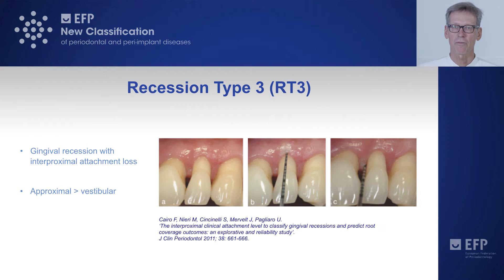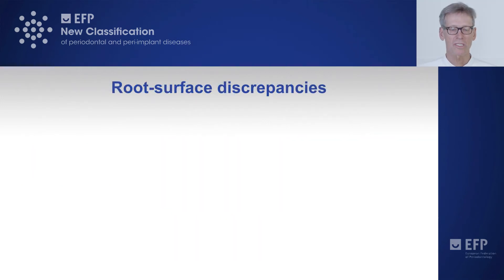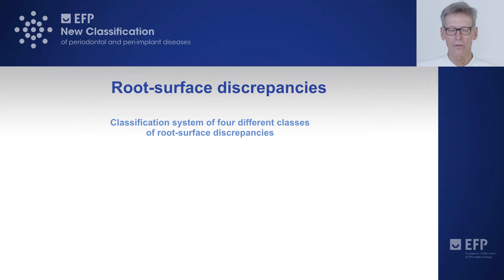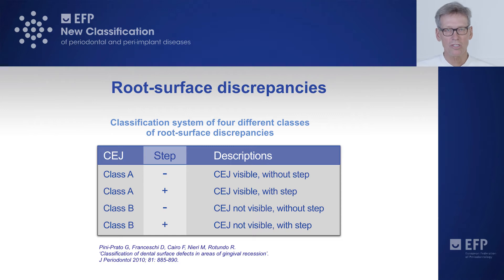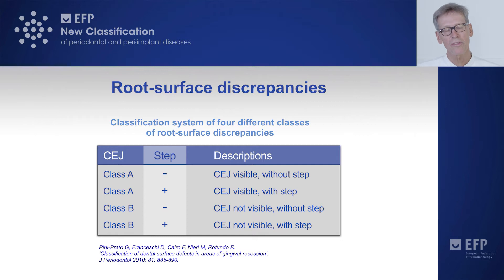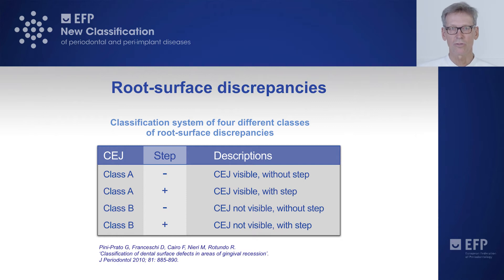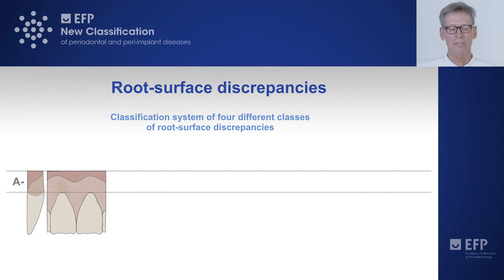Now we come back to the tooth side — the root surface condition and root surface discrepancies. There are four different classes. Class A: the CEJ is visible. Class B: the CEJ is not visible, due to, for example, abrasion or erosion. Each class can occur without a step (indicated by minus) or with a step (indicated by plus), giving four different possibilities to describe the root surface condition.